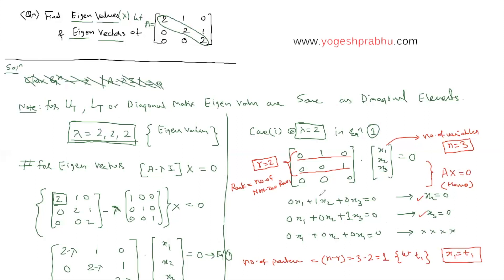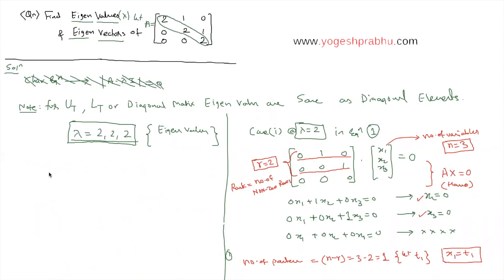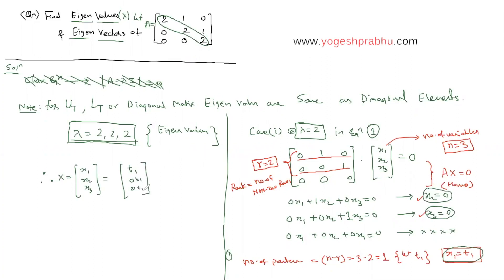Therefore, the eigenvector X = [X1; X2; X3] = [T1; 0; 0]. Taking T1 out as a common factor gives T1 times [1; 0; 0]. We write down just the multipliers, so the eigenvector is [1, 0, 0]. This is the eigenvector corresponding to the eigenvalue lambda = 2.